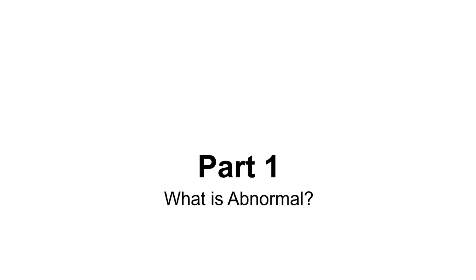Starting off with our discussion of what it means to be abnormal — this is where we have one of those disclaimers. This is something we've been discussing on and off throughout the entire course. When we discuss things like associations or scores, we have to acknowledge that we're looking at the average individual. We very rarely consider the entire scope of human possibilities for any given behavior. We typically talk about the average score, and if we're deciding something is normal versus abnormal, what does that mean?